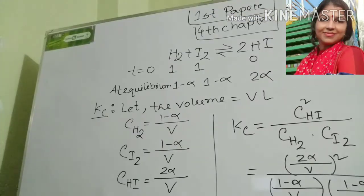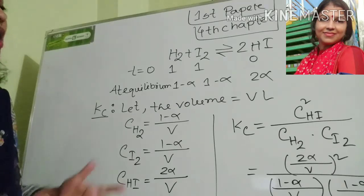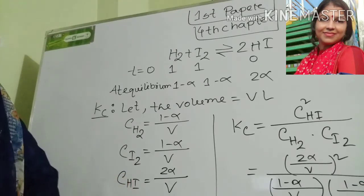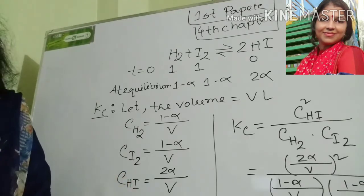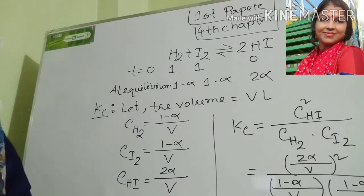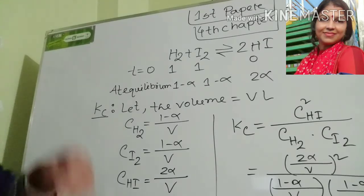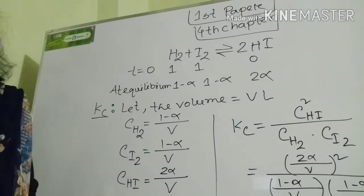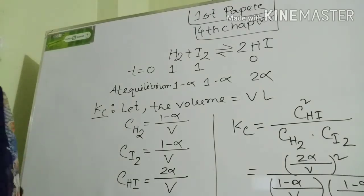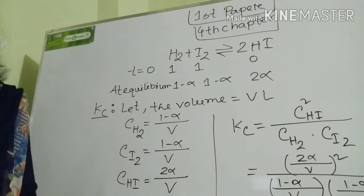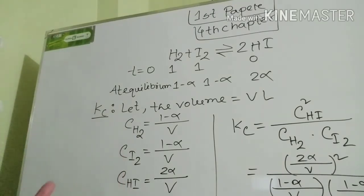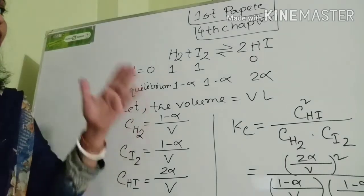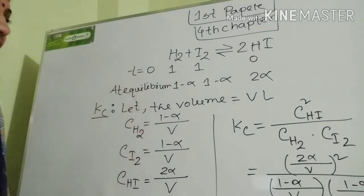In my previous class, I discussed with you the derivation of Kp and Kc for different types of reactions, like synthesis of ammonia, decomposition of phosphorus pentachloride, and decomposition of nitrogen tetraoxide. Now I will discuss with you the derivation of Kp and Kc for the synthesis of hydrogen iodide.